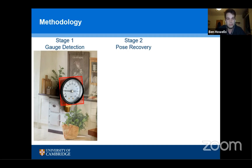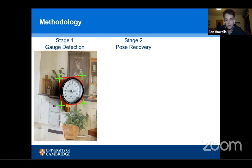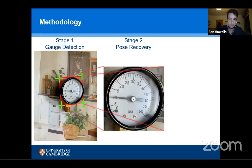We imagine the gauge is on a virtual plane and we detect the four corners of this plane which bound the gauge. We then assume that these will map to a perfect square in a face-on view, and from this we can infer a homography matrix which can be used to produce a rectified image of the gauge.